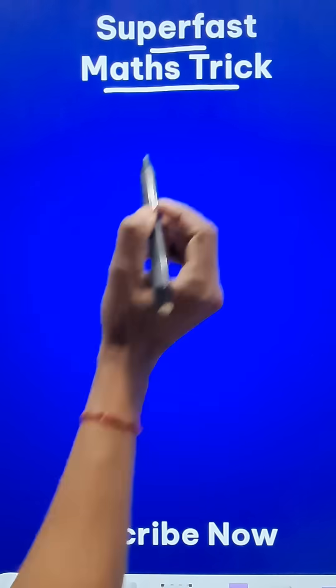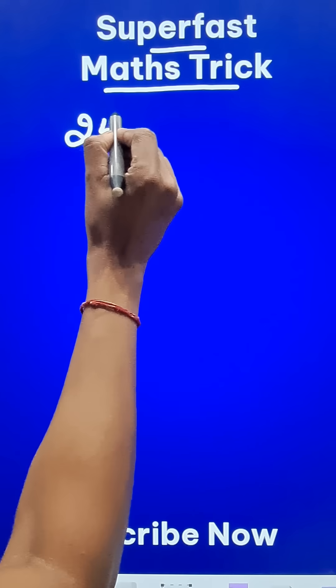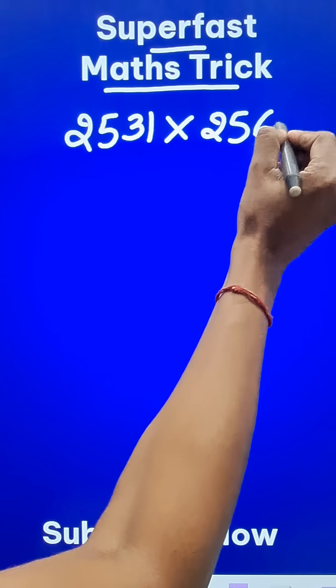Let's multiply two big numbers using this super fast mathematics trick. Suppose you have to do 2531 and multiply that by a number very close to this, 2567.